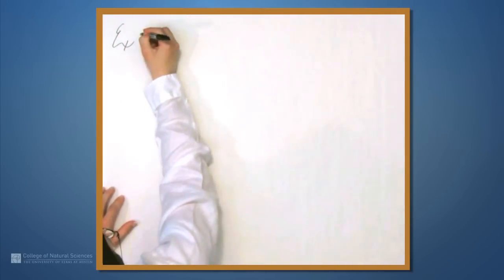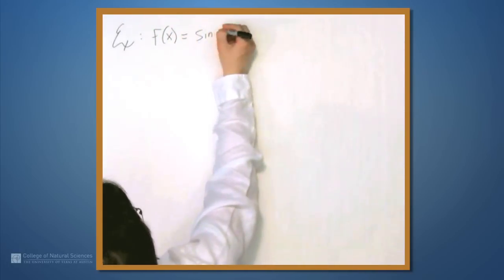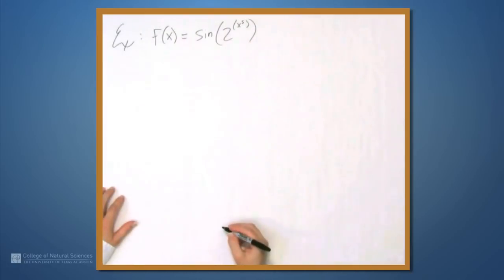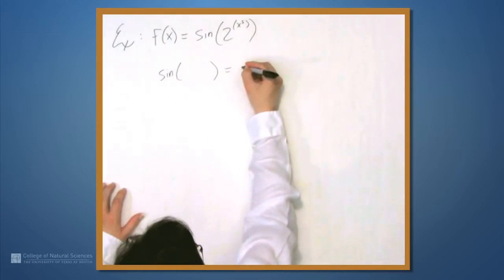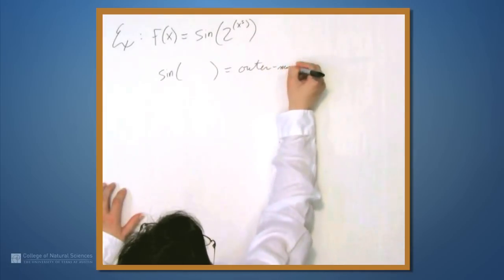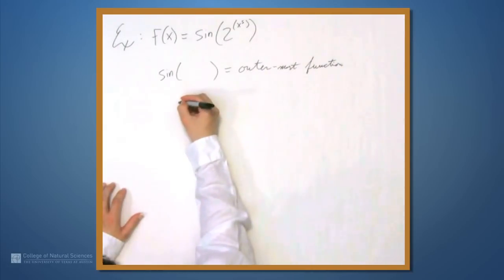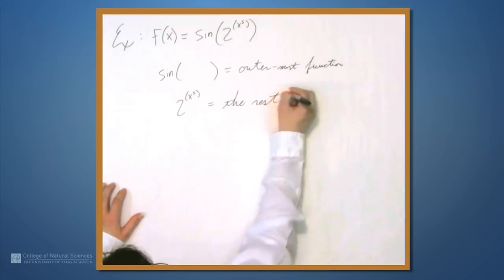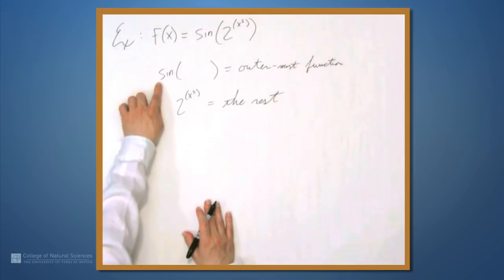Let's look at an example. Let's set f equal to sin of 2 to the x to the fifth. Here, sin of something is our outermost function, and whatever's inside — which is 2 to the x to the fifth — is the rest. Let's work through this step by step. At any given step, we're only worried about the outermost function.